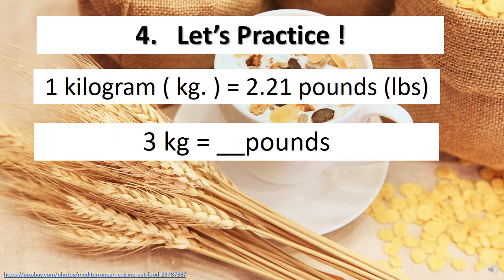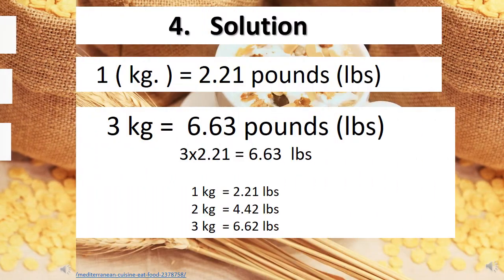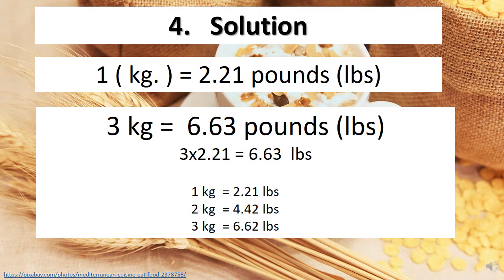Another practice: If 1 kilogram equals 2.21 pounds, how many pounds is 3 kilograms? Solution: If 1 kilogram equals 2.21 pounds, then 3 kilograms equals 6.63 pounds. The computation is 3 times 2.21 equals 6.63 pounds. You can also use this step-by-step approach: 1 kg = 2.21, 2 kg = 4.42, then 3 kg = 6.63 pounds.